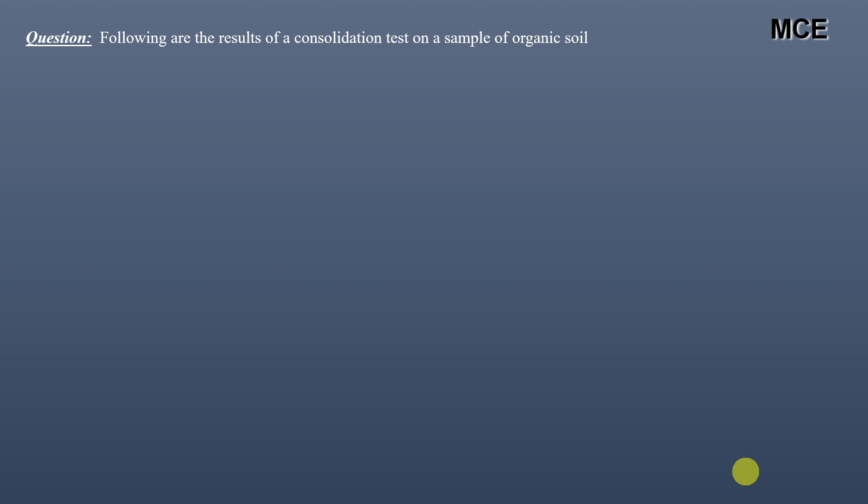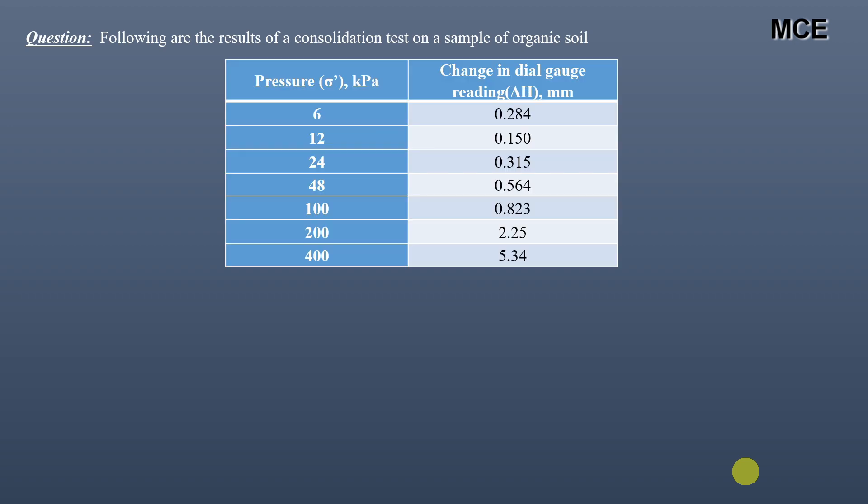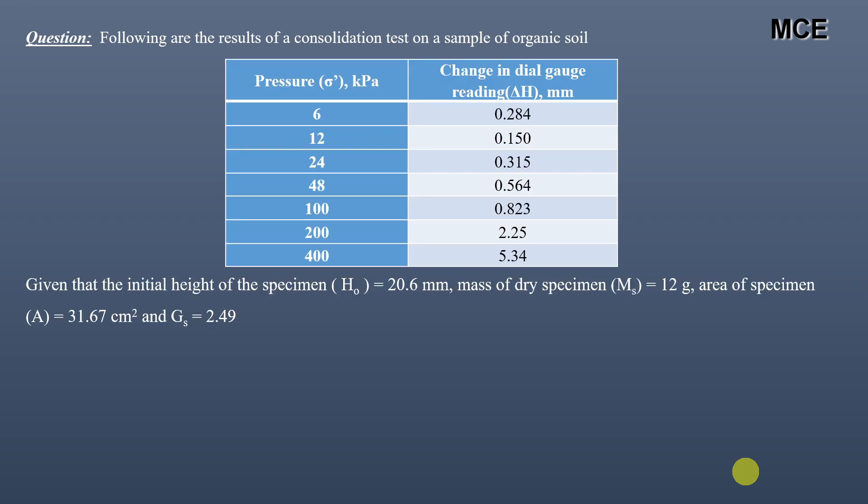The consolidation test is used to determine the rate and magnitude of settlement in soils. The settlement values obtained by this test are due to primary consolidation only, which is 90 percent of the total consolidation. The results of consolidation test are very much helpful in the design of foundations.